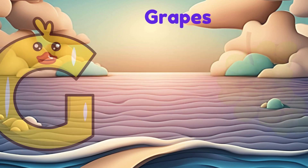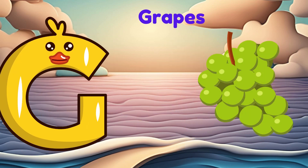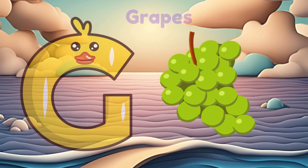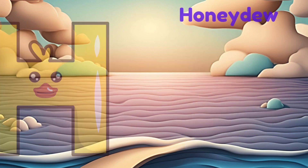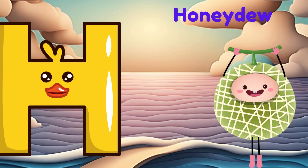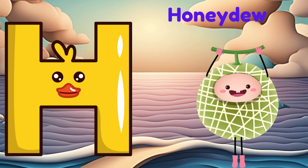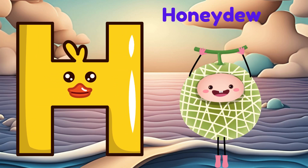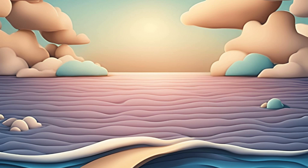G is for grapes. Guh, guh, grapes. H is for honeydew. Ha, ha, honeydew.